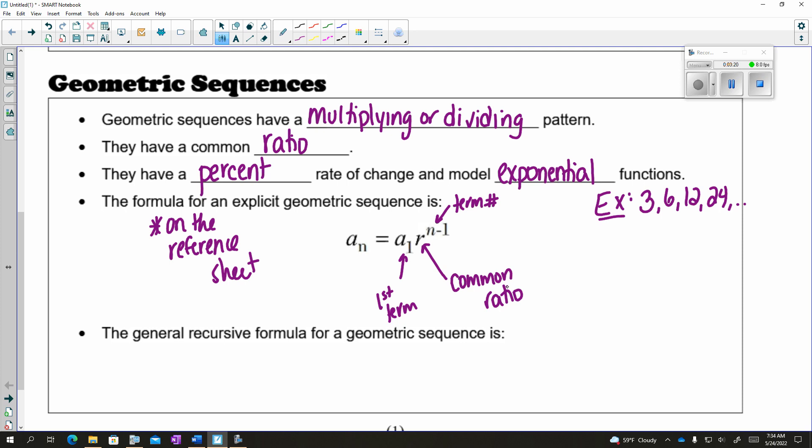If you don't know your common ratio, instead of subtracting, you could always divide. So hopefully you see here we're multiplying by 2 every time. But to find any common ratio, you can divide any two consecutive terms. So for example, 6 divided by 3 gives me 2, or 24 divided by 12 gives me 2.